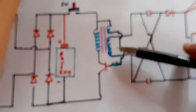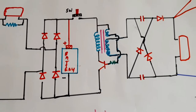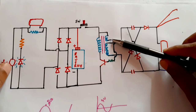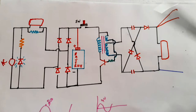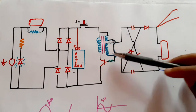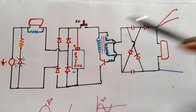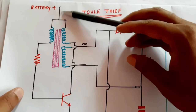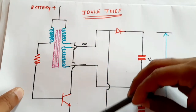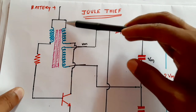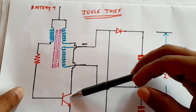There is a transformer, and how is it working? This transformer works on the principle of a blocking oscillator — sometimes called 'dual thief.' Here we are connecting the plus side and the minus side of the battery. This is the main winding, and the main winding is connected to the collector of the transistor.